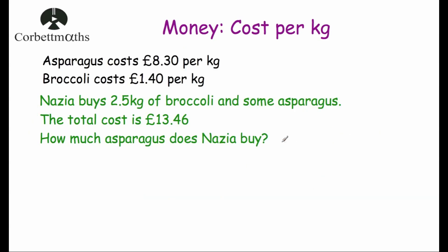Our last question: asparagus costs £8.30 per kilogram and broccoli costs £1.40 per kilogram. Nazia buys 2.5 kilograms of broccoli and some asparagus, and the total cost is £13.46. We need to find how much asparagus Nazia buys. First, the cost of broccoli: £1.40 multiplied by 2.5 equals £3.50.